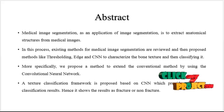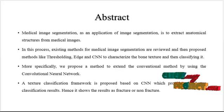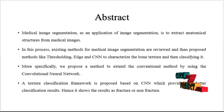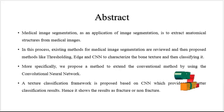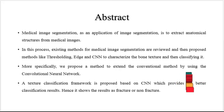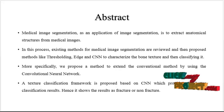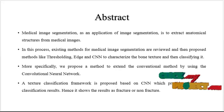Now we are going to discuss the abstract of the process. Medical Image Segmentation is an application of Image Segmentation used to extract the anatomical structures from Medical Images. In this process, existing methods for Medical Image Segmentation are reviewed, and then proposed methods like Thresholding, HB Segmentation, and CNN are used to categorize the bone texture and then classify it. This process is applied by means of three major categories: Segmentation, Feature Extraction, and Classification.